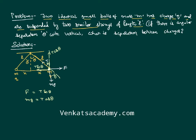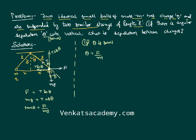Dividing these two equilibrium equations gives tan theta equals F divided by mg. Now, assuming theta is small — as given in the problem — tan theta is approximately equal to theta itself. So we can write theta equals F divided by mg.